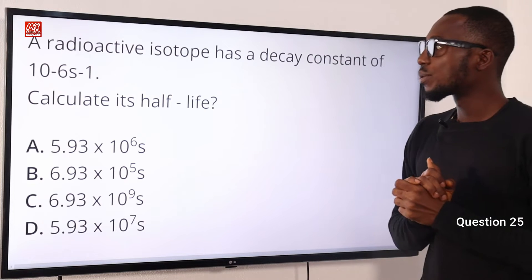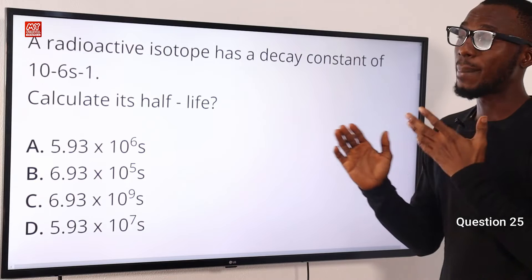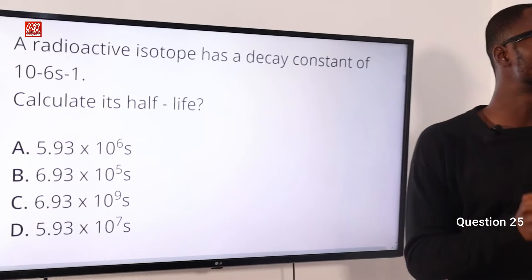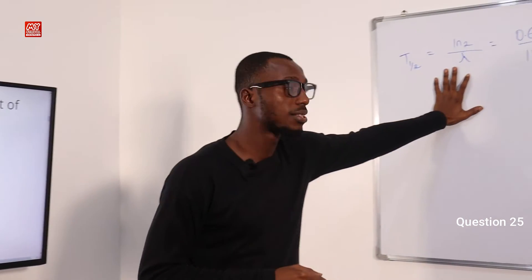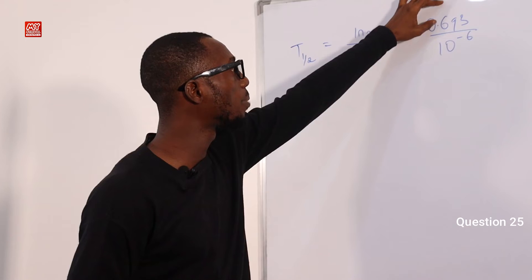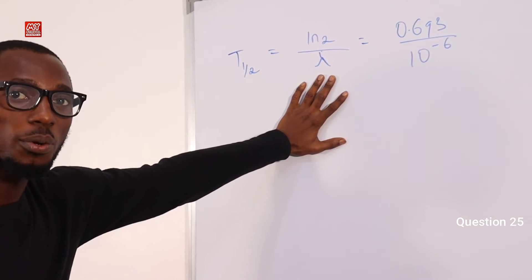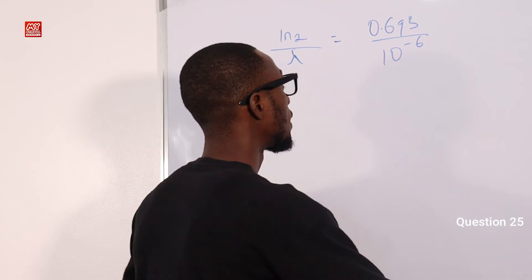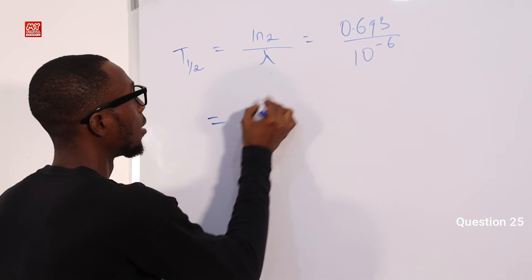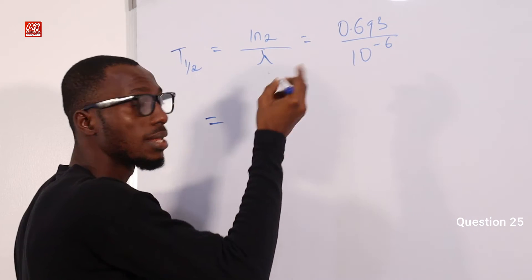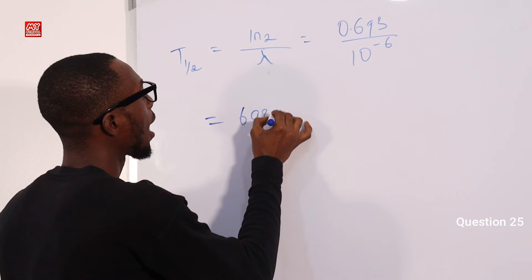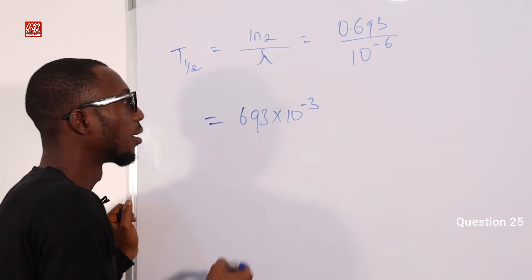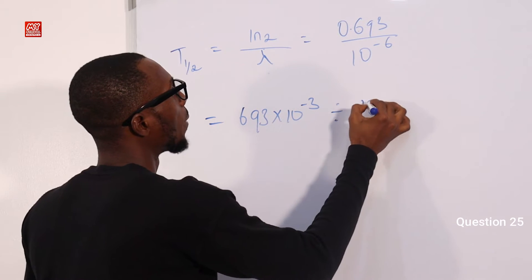Question 25. A radioactive isotope has a decay constant of 10 raised to the power minus 6. Calculate its half-life. Half-life equals 0.693 over the radioactive decay constant. The K constant given from the question is 10 raised to the power minus 6. So 0.693 means 693 times 10 raised to power minus 3, divided by 10 raised to the power minus 6.